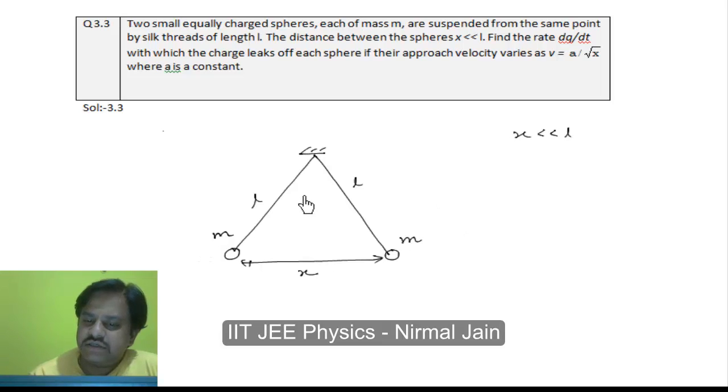It is given that X is much less than L. The question asks us to find the rate dq by dt with which the charge leaks off each sphere. If their approach velocity varies as V equals A by root X, where A is some constant.